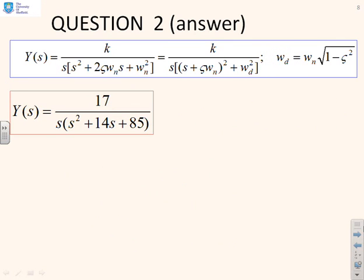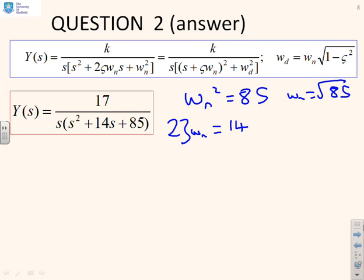Next one. 17 of s squared plus 14s plus 85. So, again, we can go straight to the solution, ω_n squared equals 85, or ω_n equals root 85, 2ζω_n equals 14, which gives you that ζ equals 7 over the root of 85.